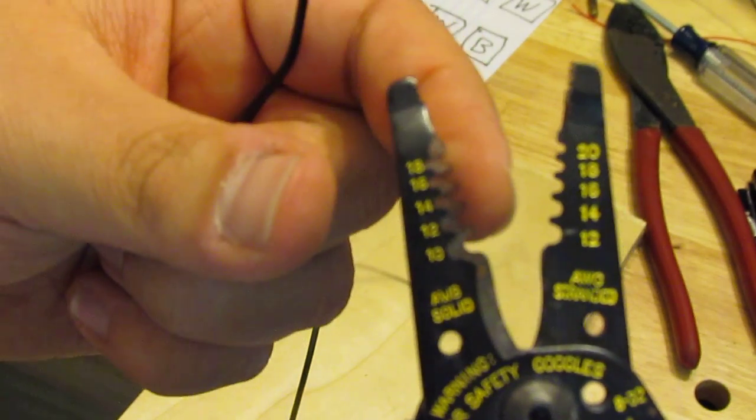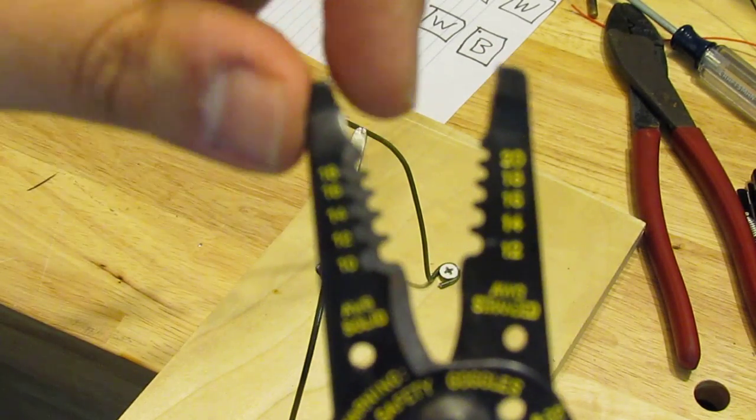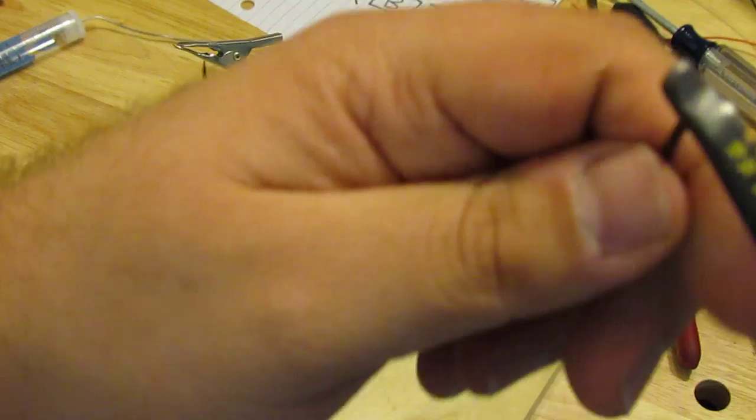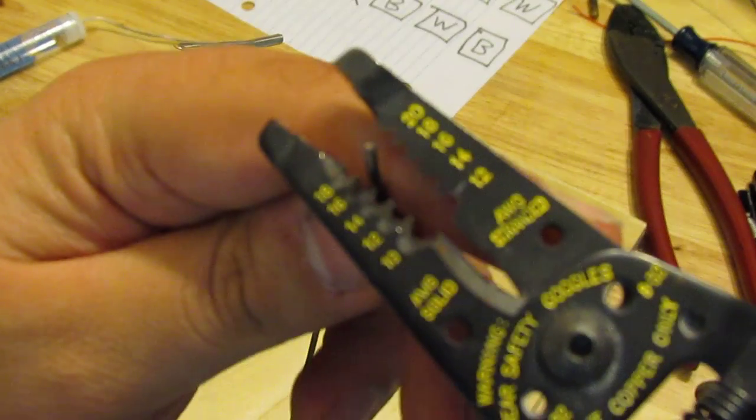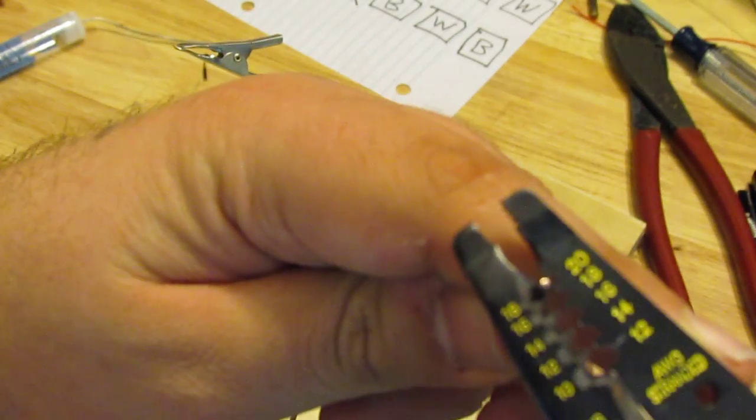And since I have a solid wire, I'm going to notch it and strip it with the solid side. So I'm going to place the wire onto the 18 notch, just like that.